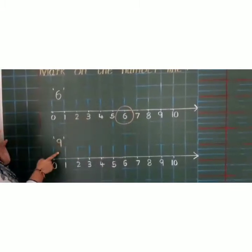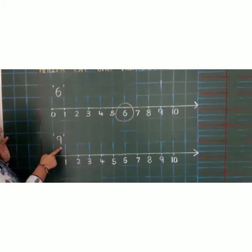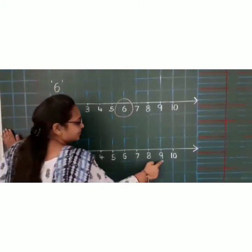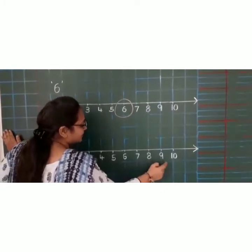Next. Which number is this? 9. And where is 9 on the number line? Here. We are going to encircle it.